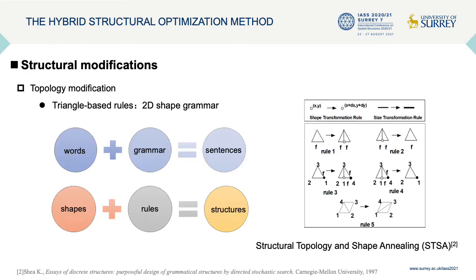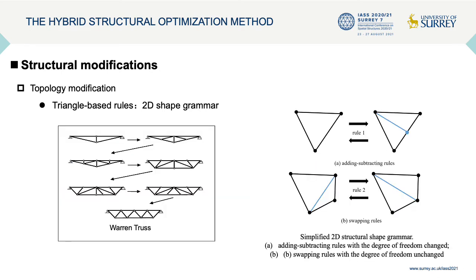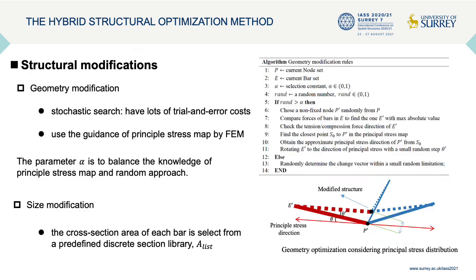For topology modification, it is developed by a grammar and graph-based method called STSA, which, like human language, makes rules with basic structure elements to generate the truss layout. For 2D cases, we use a set of triangle-based rules. There are two powerful rules: Rule 1 is adding and subtracting rules, and Rule 2 is swapping rules. For geometric modification, the node position is changed by both stochastic search and the knowledge of the principal stress map. We use alpha to balance the knowledge of the principal stress map and the random approach. For size modification, the cross-sectional area of each bar is selected from a predefined discrete section library.